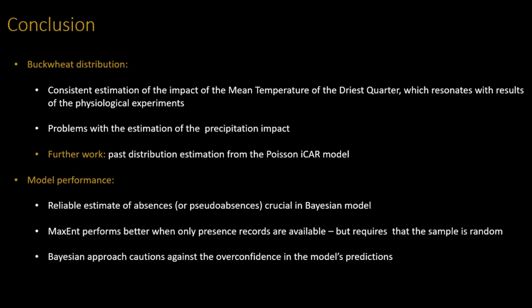In conclusion, between the two models that worked I got quite consistent estimation of the effect of the mean temperature of the dry quarter — this clearly has an effect, where the probability grows as temperature increases, peaks, and then goes down. There are a lot of problems with the estimation of precipitation, which leads me to think I need to consider how it interacts with other variables and try to incorporate these interactions into the models. The future work is to fit the model based on present distribution to estimate the past distribution of buckwheat.